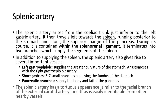In addition to supplying the spleen, the splenic artery also gives rise to several important vessels. The left gastroepiploic supplies the greater curvature of the stomach and anastomoses with the right gastroepiploic artery. Short gastrics are five to seven small branches supplying the fundus of the stomach. Pancreatic branches supply the body and tail of the pancreas. The splenic artery has a tortuous appearance, similar to the facial branch of the external carotid artery, and is thus easily identifiable from other nearby vessels.